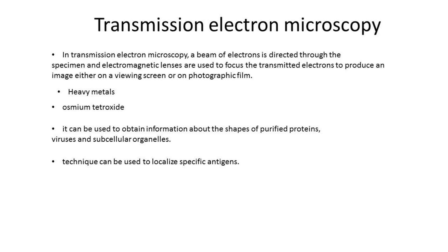Transmission Electron Microscopy: In Transmission Electron Microscopy, a beam of electrons is directed through the specimen and electromagnetic lenses are used to focus the transmitted electrons to produce an image either on a viewing screen or on photographic film. As in standard light microscopy, thin sections of the specimen are viewed. However, for transmission electron microscopy, the sections must be much thinner — 50 to 100 nm thick.